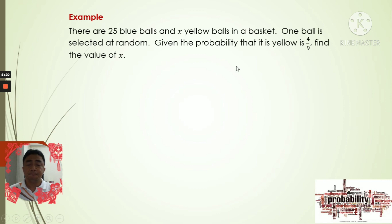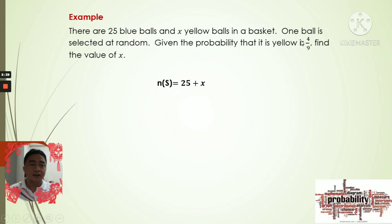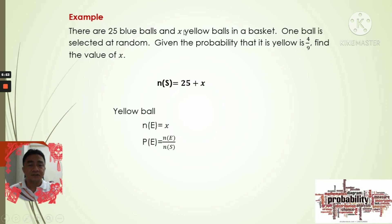We identify the sample space and the event. The sample space includes all balls: blue plus yellow, which is 25 plus x. The event is selecting a yellow ball, and the cardinality of the yellow ball is x. Using the probability formula, we have: 4/9 equals x divided by (25 plus x).